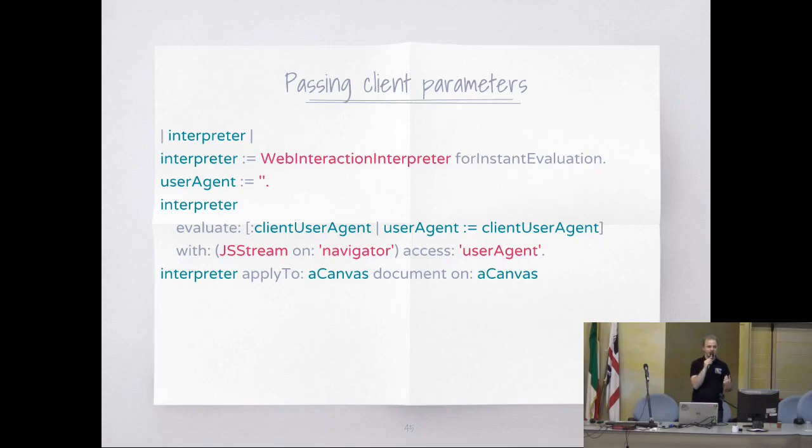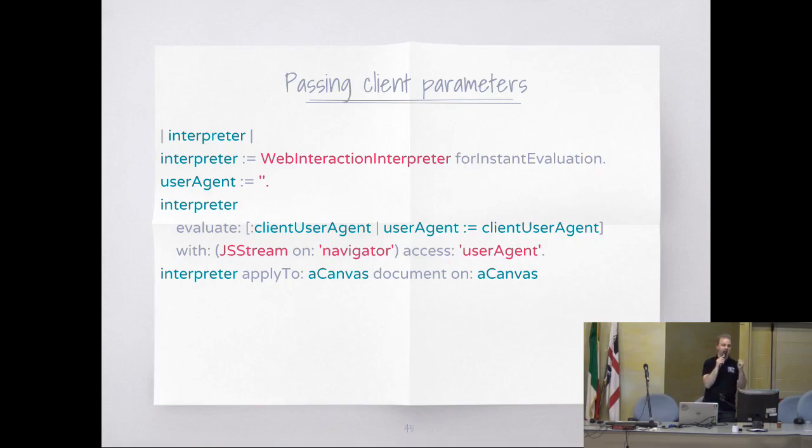We'll create a web interaction interpreter for instant evaluation. This will be, when applied and the page is rendered, it will automatically execute. When the page finishes rendering, it will execute that function.